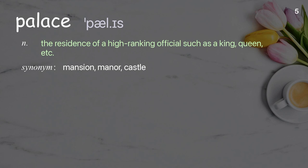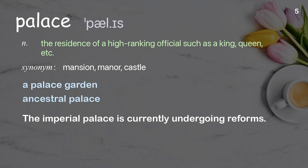Palace: the residence of a high-ranking official, such as a king, queen, etc. Examples: a palace garden; ancestral palace. The imperial palace is currently undergoing reforms.